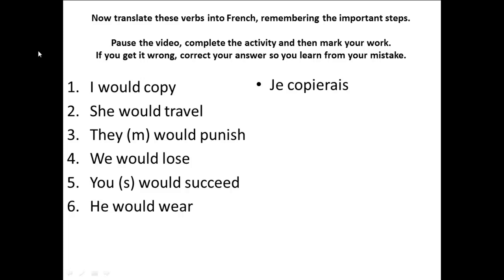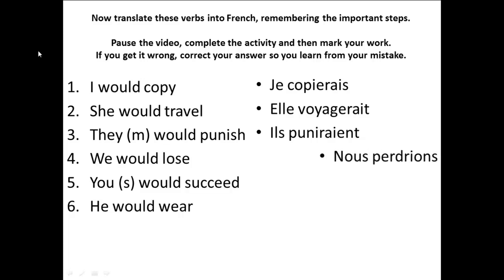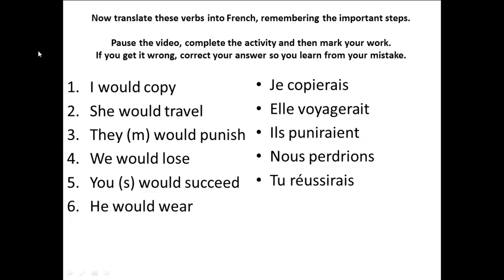Number two: 'she would travel' — elle voyagerait. Number three: 'they would punish' — ils puniraient. Number four: 'we would lose' — nous perdrions. Number five: 'you would succeed' — tu réussirais. Notice it's you singular would succeed. Number six: 'he would wear' — il porterait. Notice how each time the magic R is kept before the ending is added.